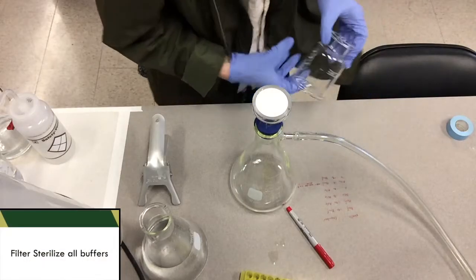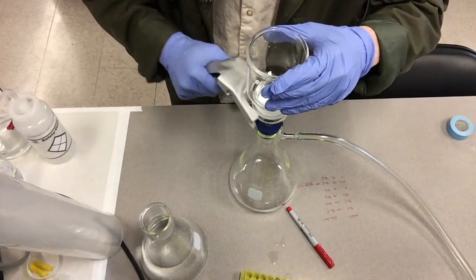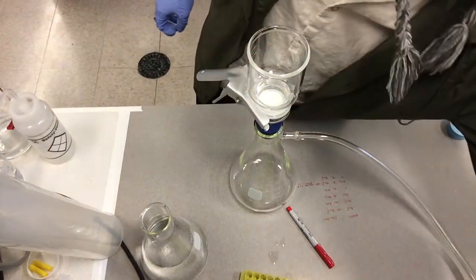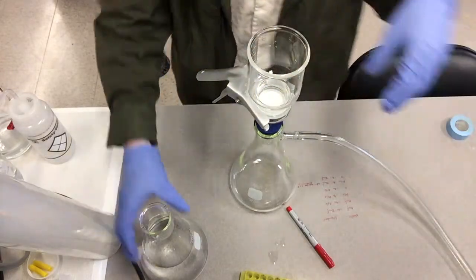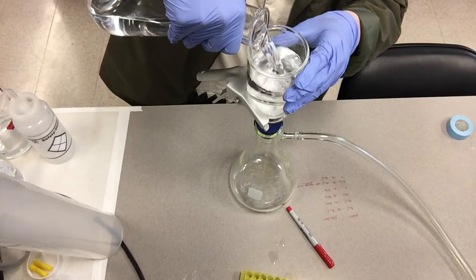The first thing we're going to do is filter sterilize all of our buffers. This is important because we don't want any filaments or any pieces of material to come through and destroy our column, so it needs to be as clean as possible.